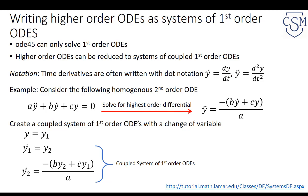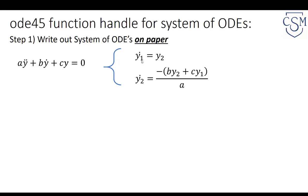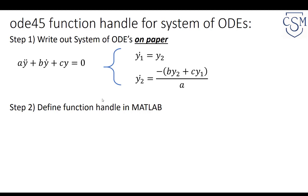Now we could use this coupled system to solve with ODE45. The first step in making a function handle for a higher-order system is not writing it out in MATLAB. The first step is to put down your computer, grab a piece of paper and pencil, and write out the system of ODEs. For our example, y1-dot equals y2, and y2-dot equals negative b*y2 plus c*y1 over a. Once you've written it out on paper, then you define a function handle in MATLAB.